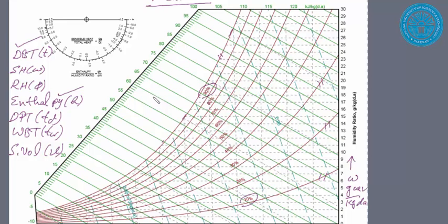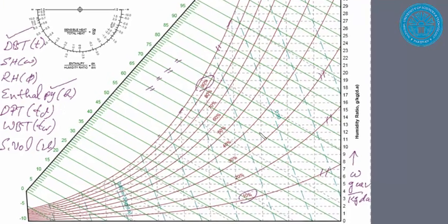Enthalpy lines - these are constant enthalpy lines. Then dew point temperature - we see horizontal lines. These dotted horizontal lines represent the dew point temperature.